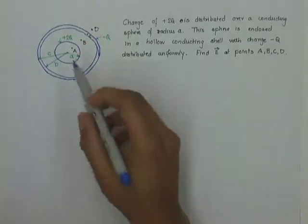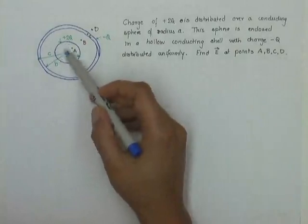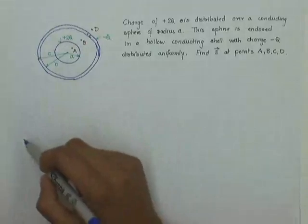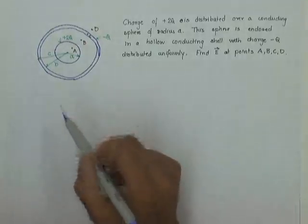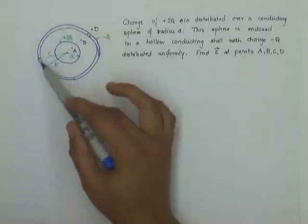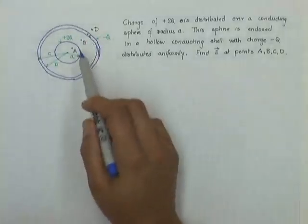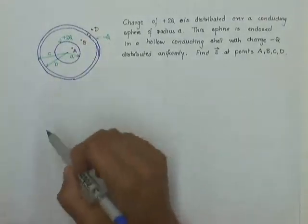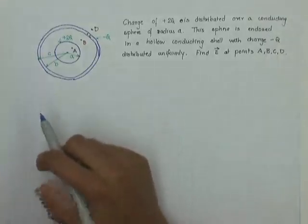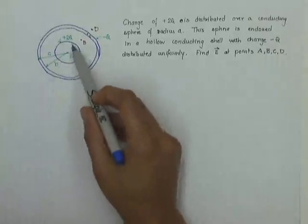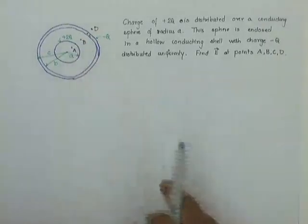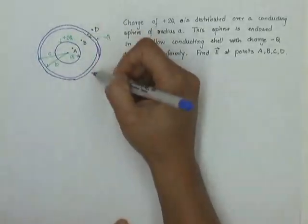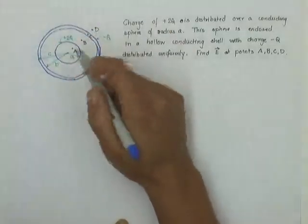In this problem, we are given that a charge of +2q is distributed uniformly over a solid sphere of radius a, made of conducting material. This sphere is enclosed completely in a hollow shell, also made of conducting material, with a charge of -q distributed uniformly over it. We want to find the electric field at point A (inside the sphere), point B (between the solid sphere and the hollow shell), point C (inside the wall of the hollow shell), and point D (outside the hollow shell).